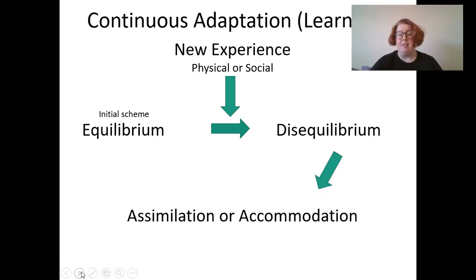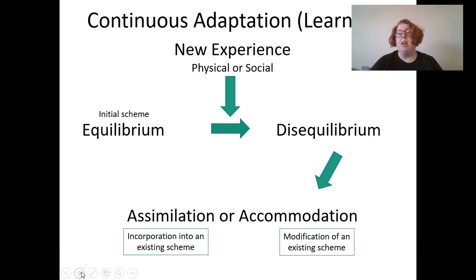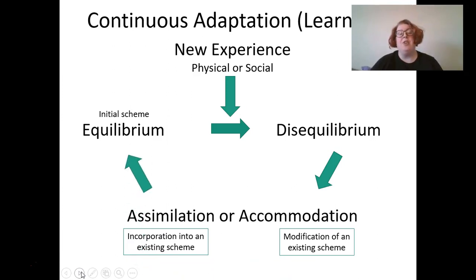There are two ways you can make sense of a new experience: assimilation or accommodation. Assimilation is incorporation into the existing schema — you take the new experience and fit it into how you already understand the world. Accommodation means you modify your existing schema to make room for the new experience. Those are the mechanisms of development, and once you've done that, you're at a new state of equilibrium, ready for a new experience.